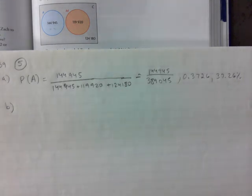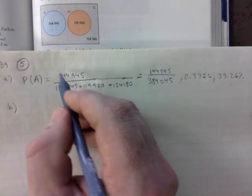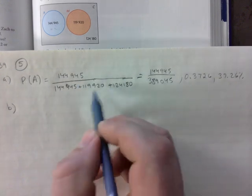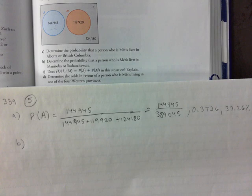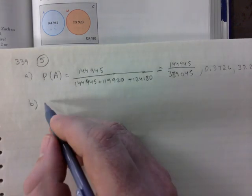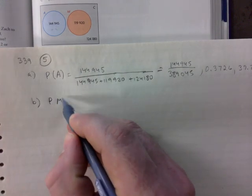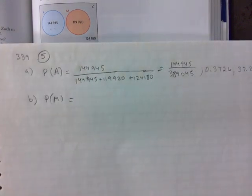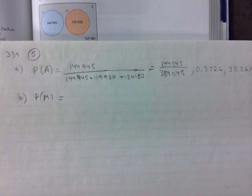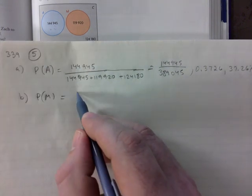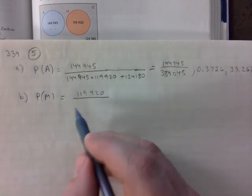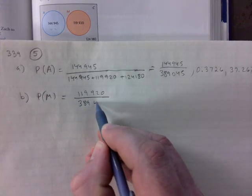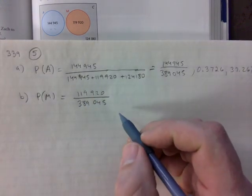Part B - determine the probability that a person who is Métis lives in Manitoba Saskatchewan. It's basically asking for this. So you would just go 119,920 over 389,045.